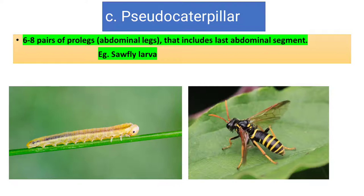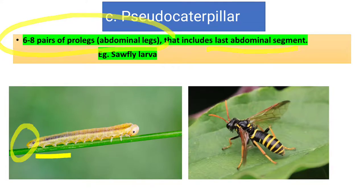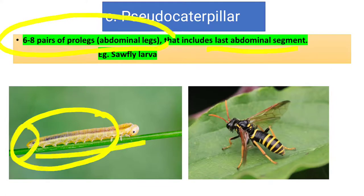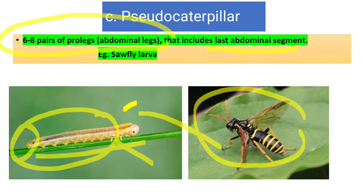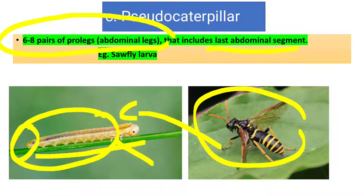Third is the pseudo-caterpillar, which mimics a caterpillar but is not a true caterpillar. It is not a true caterpillar because it has around six to eight pairs of pro-legs on the abdomen including on the last abdominal segment. As you can see in the figure, almost every segment has a pro-leg. It belongs to sawfly (Diptera), whose larva is this type — a pseudo-caterpillar that mimics a caterpillar. The term 'caterpillar' is used for Lepidoptera, so for sawfly we use the term pseudo-caterpillar.